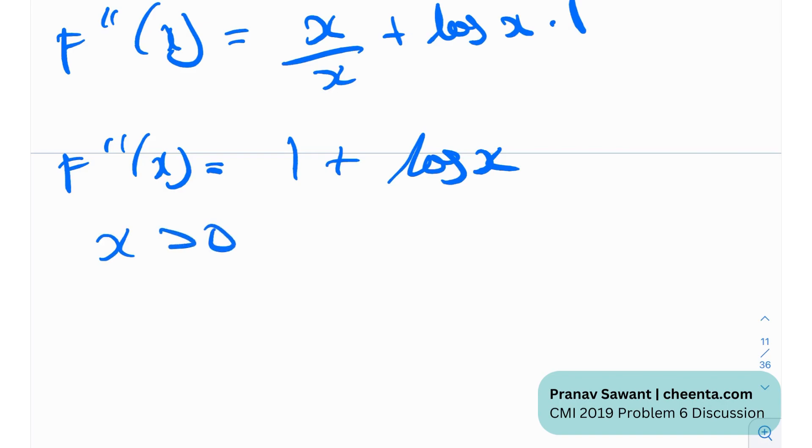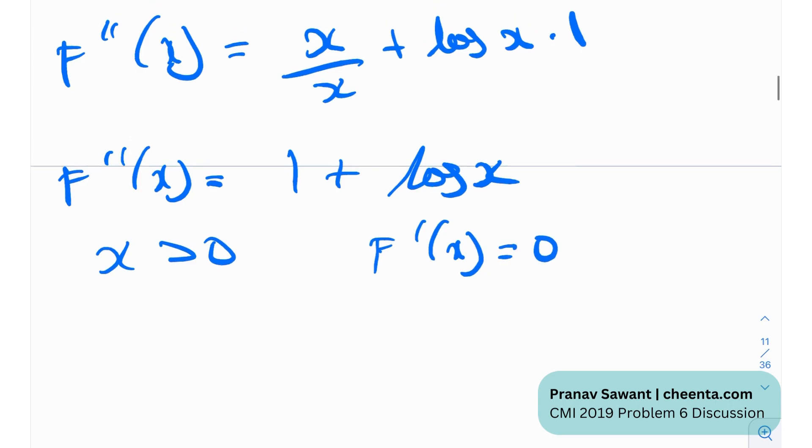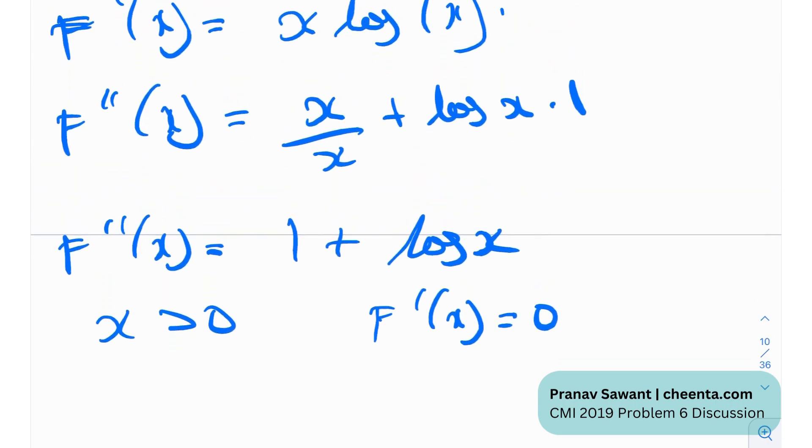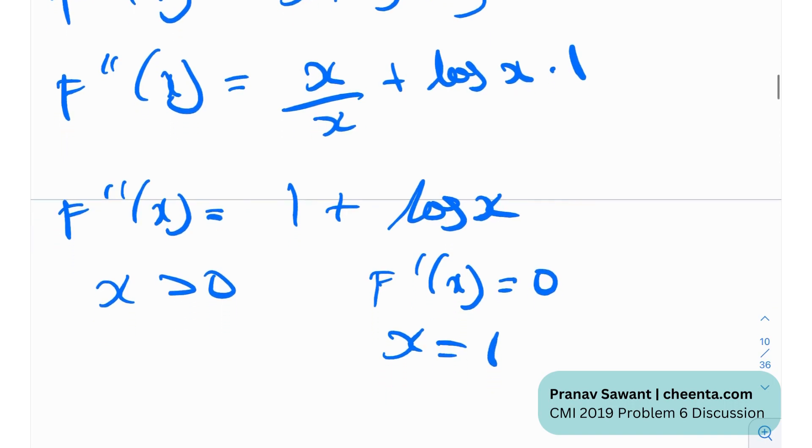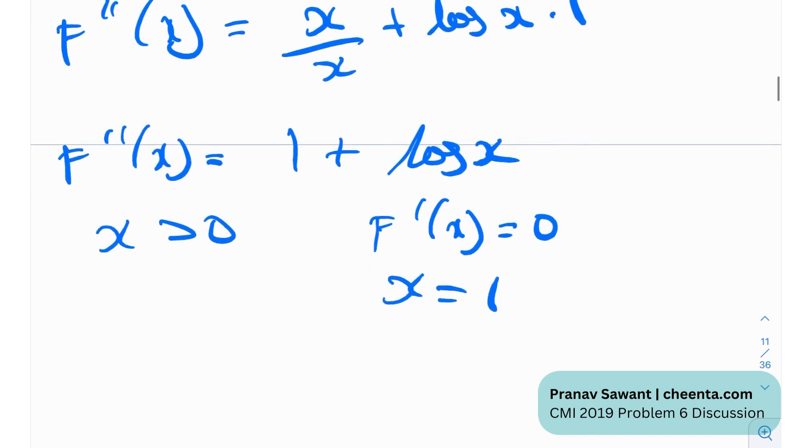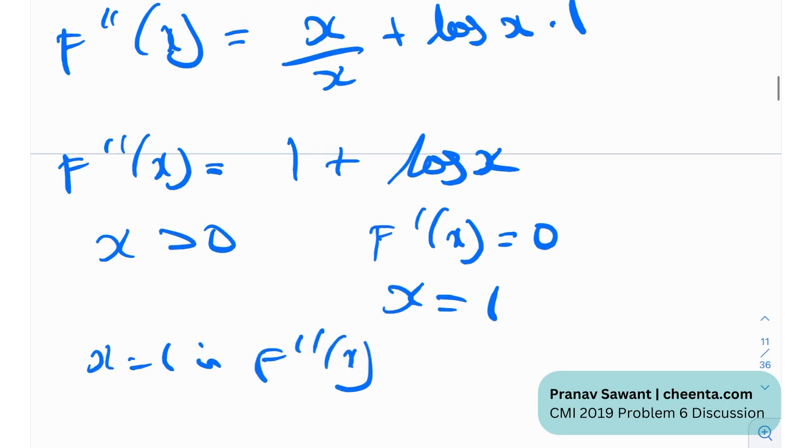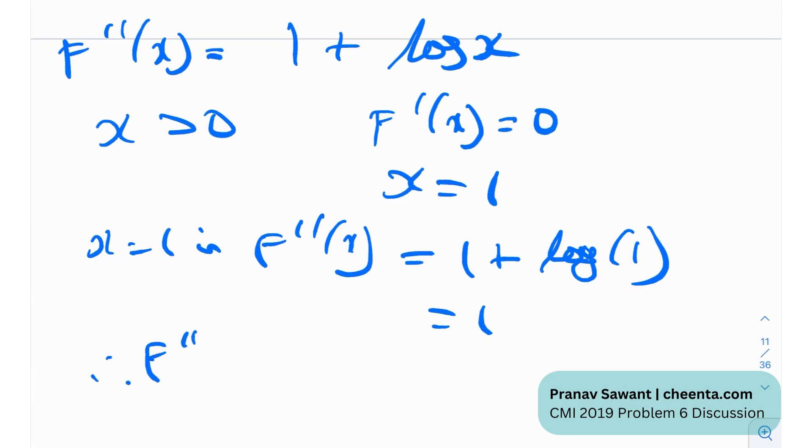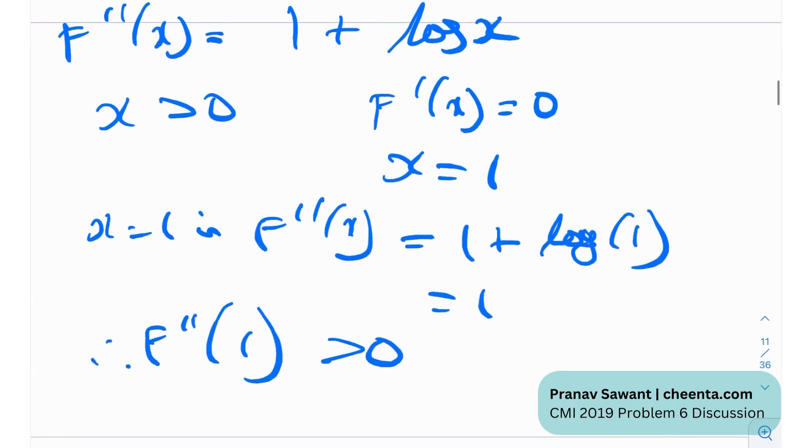And that's great now because x is greater than zero is given. So where will f prime of x be equal to zero? Just kind of recap, f prime of x was this. Now f prime of x would be zero at x equals to one. It cannot be zero because log zero is really not defined in the real world. So we have x equal to one where f prime of x gives us zero. Now if I just put in x equals to one in f double prime x I would get one plus log one which is zero so this is one. So therefore we actually see that f double prime of one is greater than zero therefore we have a minima.